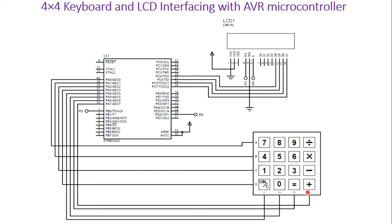Columns are defined as input and rows as output. Rows A, B, C, D are connected with PA0 to PA3, and the 4 columns are connected with PA4 to PA7. This is a 16x2 LCD with 8 data lines D0 to D7. I have used only the last 4 bits — D4, D5, D6, D7 — connecting the LCD in 4-bit mode to save microcontroller pins.